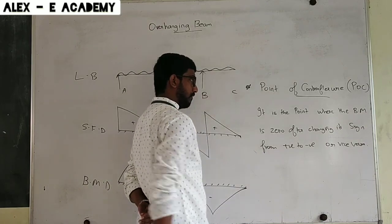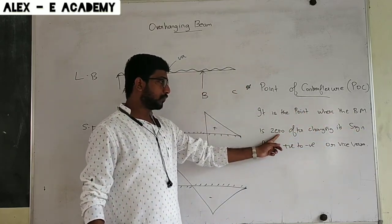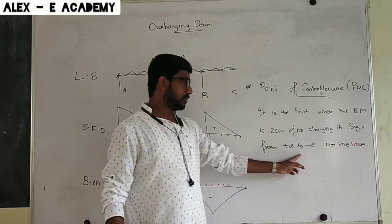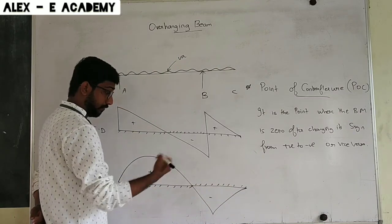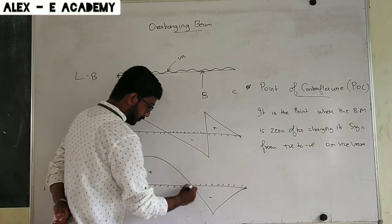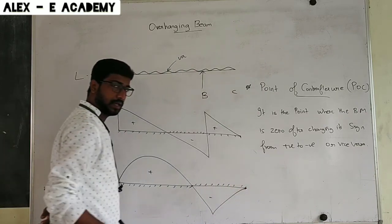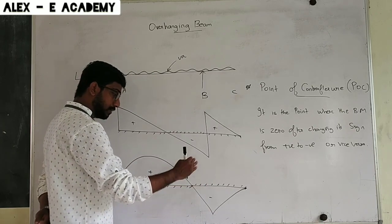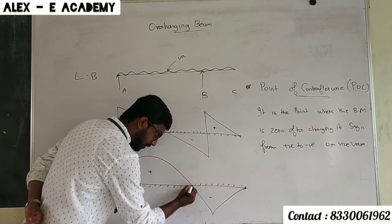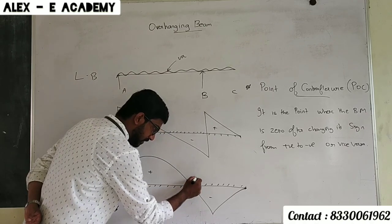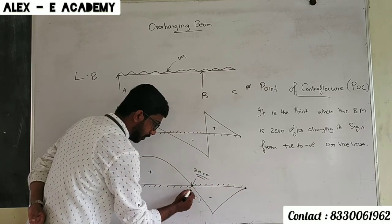Point of contraflexure. It is the point where the bending moment is zero after changing its sign from positive to negative, or vice versa. When the bending moment changes from positive to negative or negative to positive, at that point it will meet the baseline. Here the bending moment will be equal to zero, and this point is known as point of contraflexure.